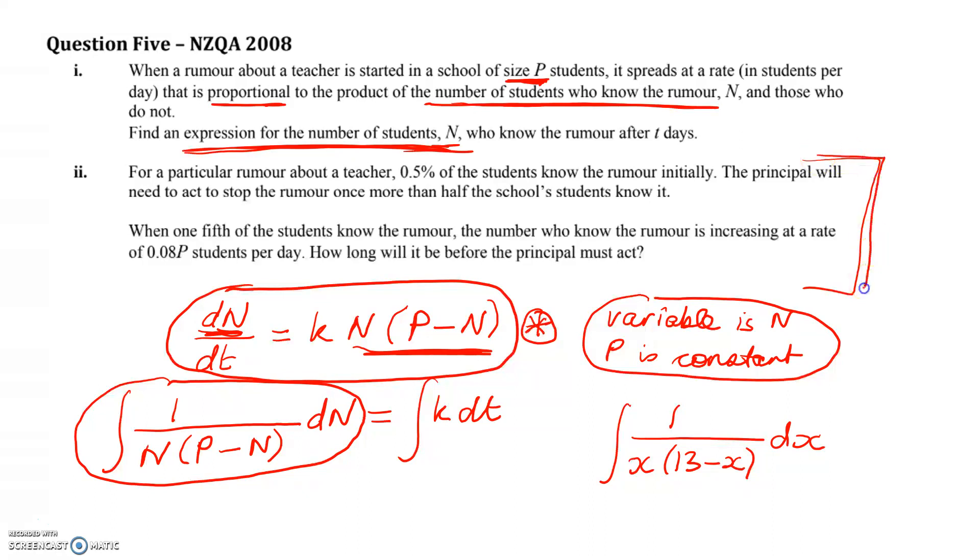In this part of the video I'm going to look at these two questions. We're told that initially 0.5% of the students know the rumour. The principal has to stop the rumour once more than half the school students know it. And when one-fifth of the students know the rumour, the number who know is increasing at this rate. So how long until he or she has to act?